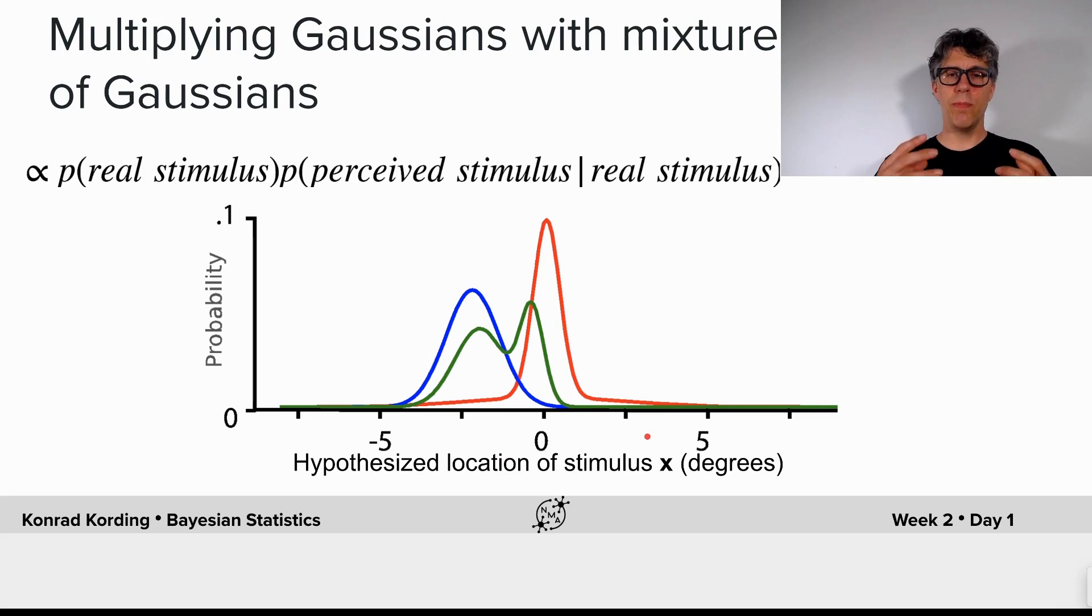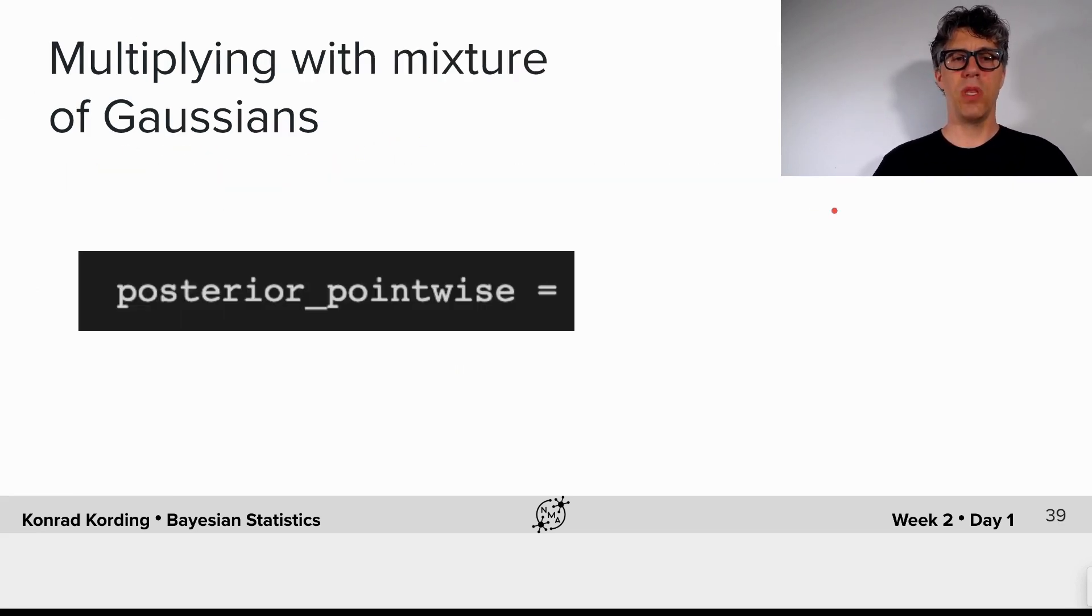We now want to multiply Gaussians with the mixture of Gaussians, which, just like before, is proportional to the prior times the likelihood. Now it's time for you to do that. Calculate the posterior in this case for the mixture of Gaussians, or in other words, the causal inference model.